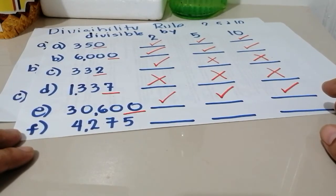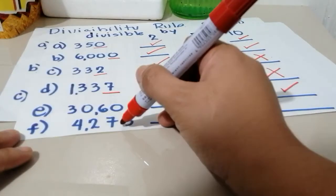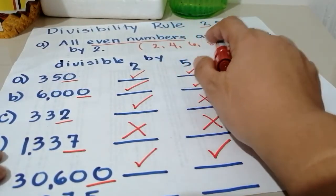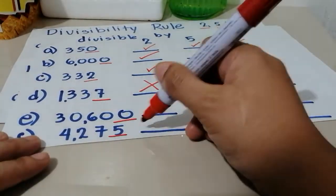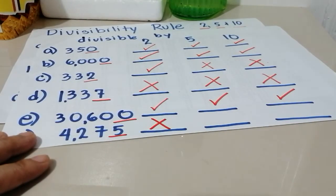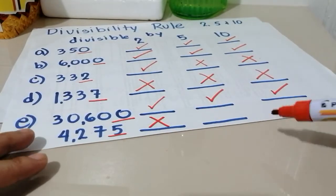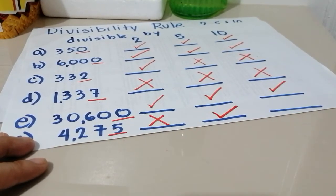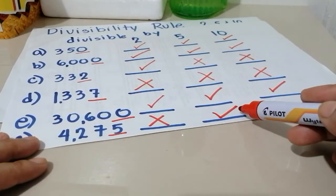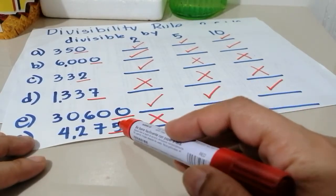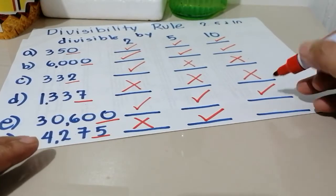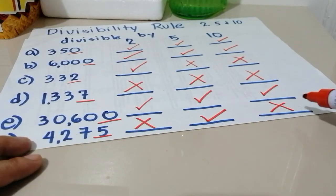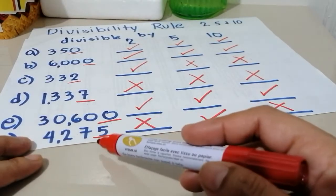The last number is 4,275. And the ones digit is 5. 5 is not an even number, because wala siya dito sa pagpipilian nating 2, 4, 6, 8, and 0. Because of that, this is not divisible by 2. But since the ending is 5, then we say that this number is divisible by 5, because any number whose ones digit is 0 or 5 is always divisible by 5. And since this is 5 and it's not 0, meaning this is not divisible by 10, because in order for a number to be divisible by 10, it should always end in 0.